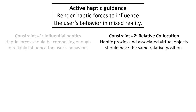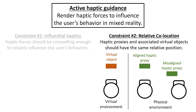The second constraint is the relative co-location constraint. When using haptics in mixed reality, the positions of the haptic proxy and the associated virtual object need to be the same, relative to the user's position. This is done to ensure that the haptic forces align with the virtual object that is meant to exert these forces, which helps to make the experience feel more realistic. Failure to meet this constraint can result in a break in presence, where the user is not immersed in the virtual environment. In practice, fulfilling this constraint requires that the position of the haptic proxy is constantly updated in order to match the relative position of the virtual object.